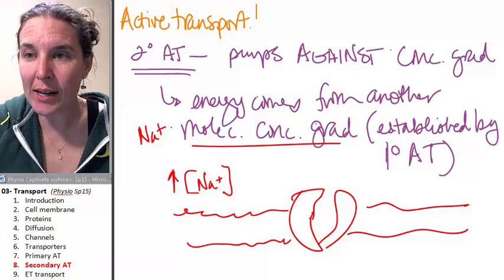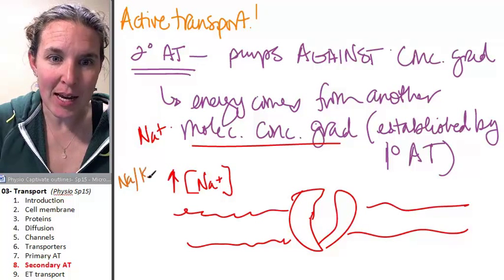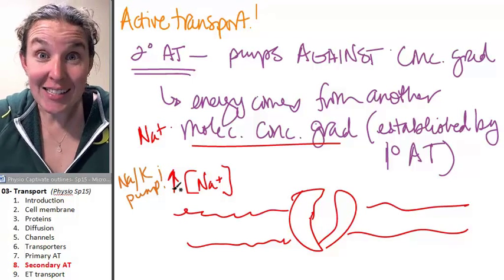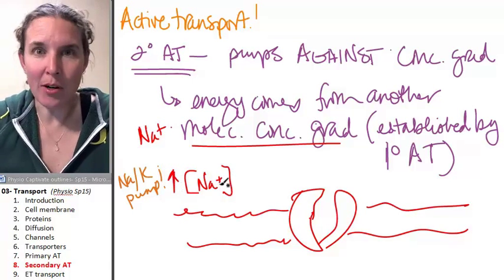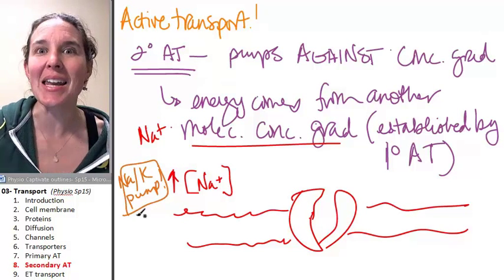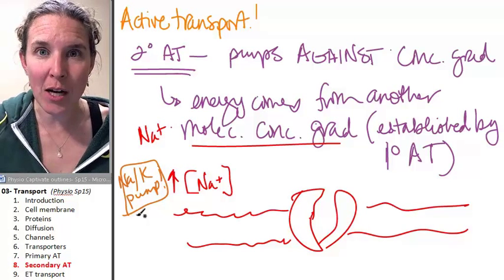That is only going to happen if you have the sodium-potassium pump. That's an example of a primary active transporter - it required ATP to do it. But just the act of creating a sodium concentration gradient,